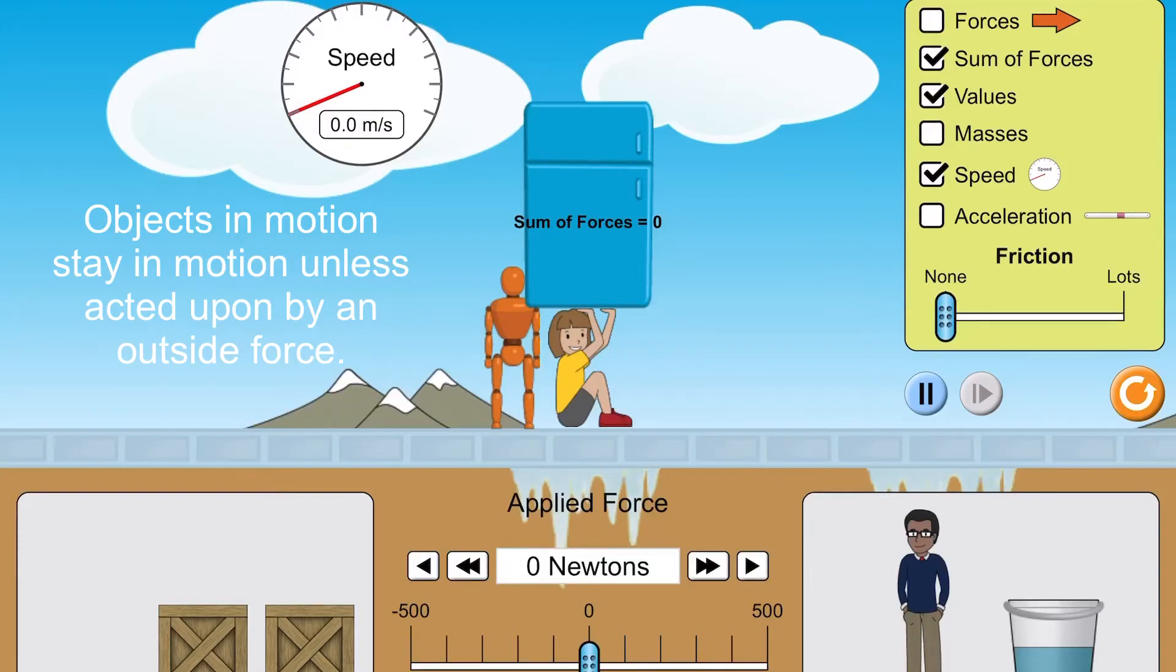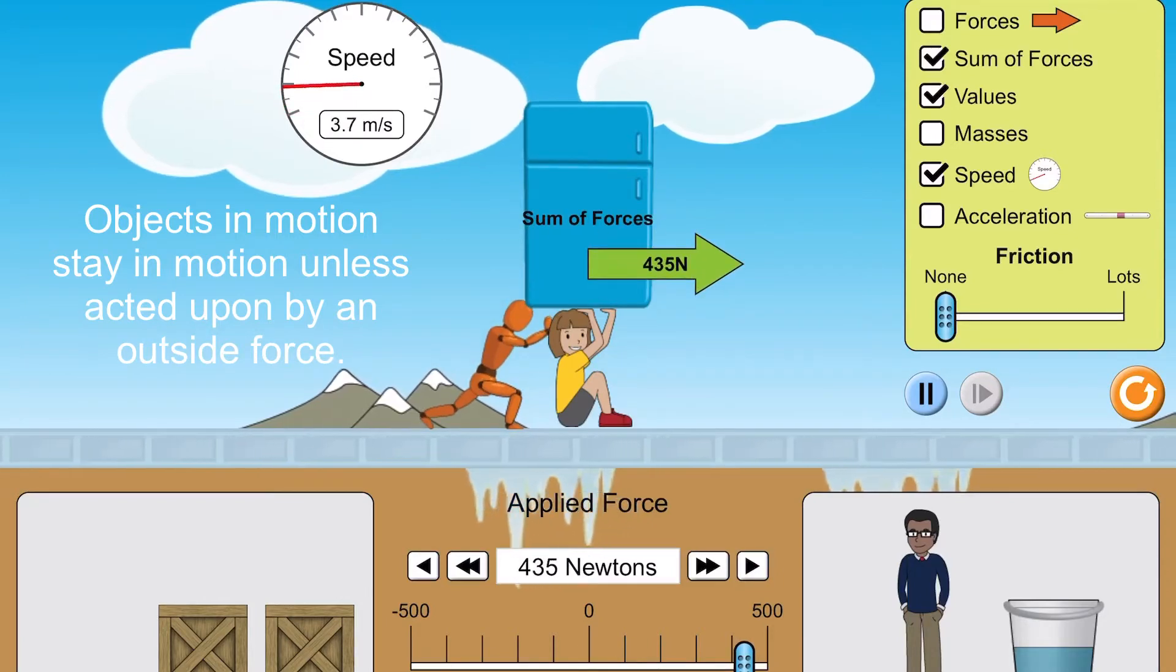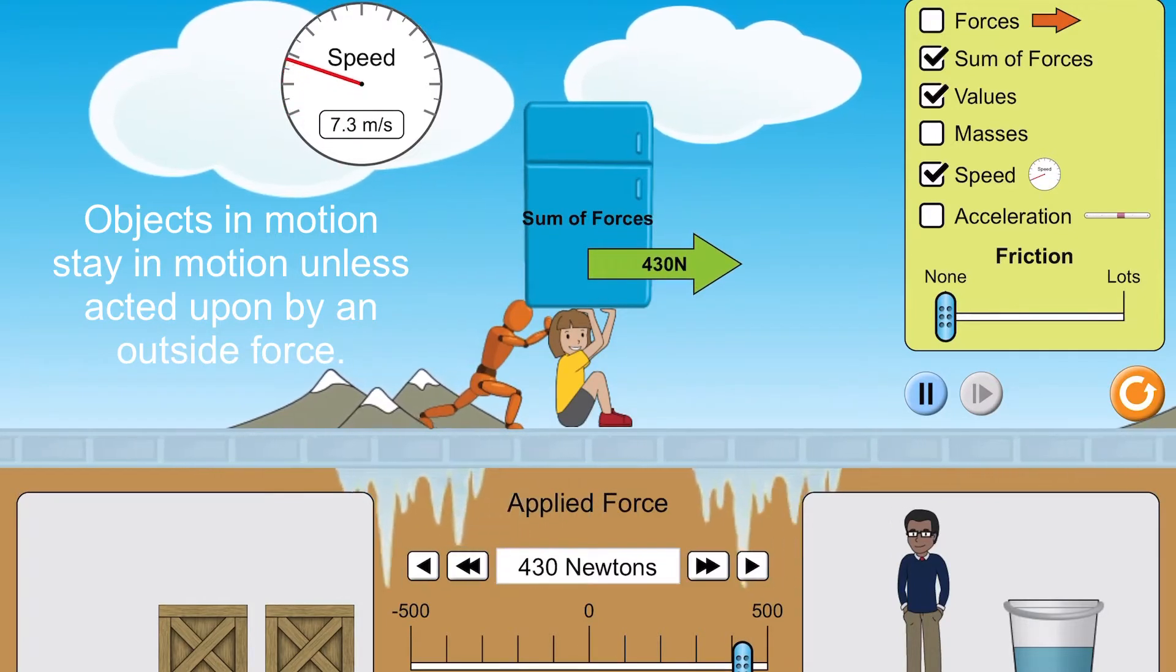Newton's law says that objects in motion must stay in motion unless acted on by an outside force. Then how come most objects that you see in your everyday life slow down and come to a stop?